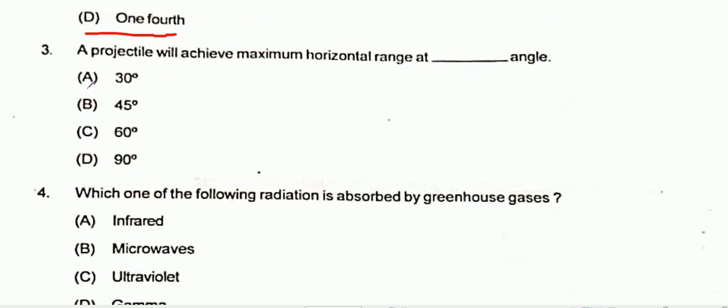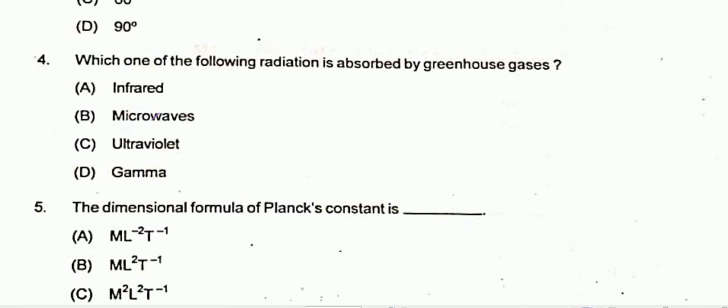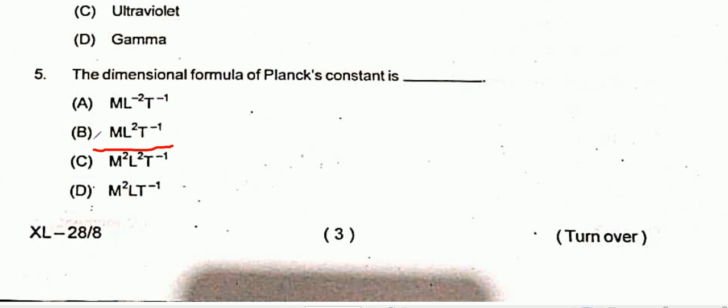Question 3: A projectile will achieve maximum horizontal range at an angle of 45 degrees. Option B is the correct one. Question 4: Which of the following radiation is absorbed by greenhouse gases? Option A is the correct one, that is infrared. Question 5: The dimensional formula of Planck's constant is ML²T⁻¹. Option B is the correct one.